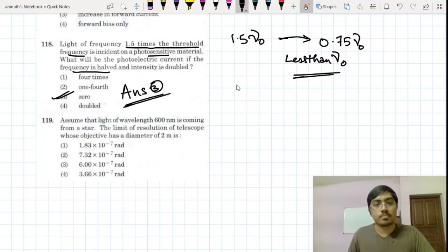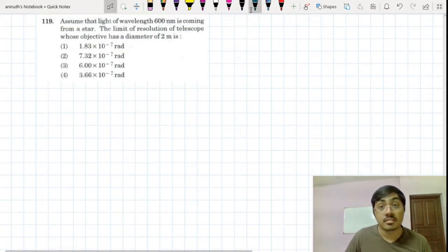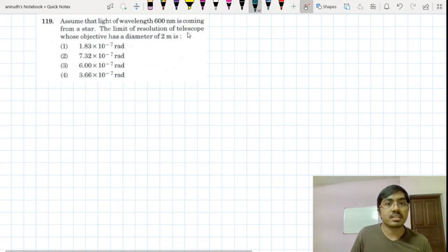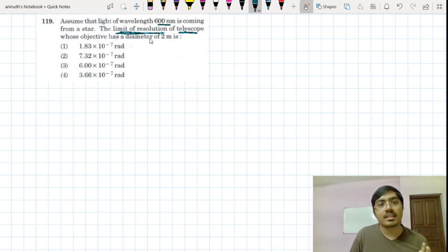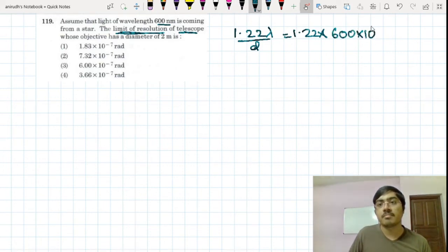Question number 119 is from the topic of ray optics, and this time the question is from the telescope part. Limit of resolution has been asked in this question. Assume that light of wavelength this much is coming from a star. The limit of resolution has a standard equation: 1.22 lambda divided by the diameter. So this is 1.22 multiplied by lambda, which is 600 into 10 to the power minus 9 nanometer, converting it into meter, divided by 2.